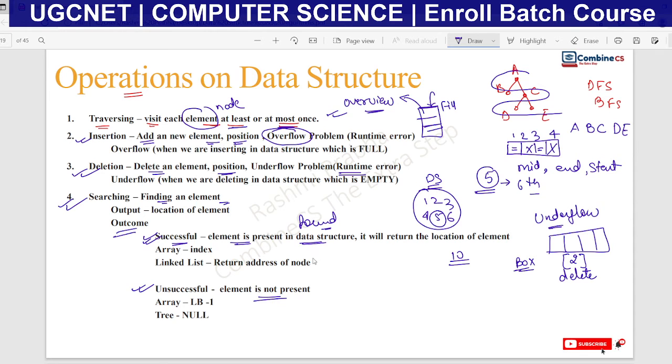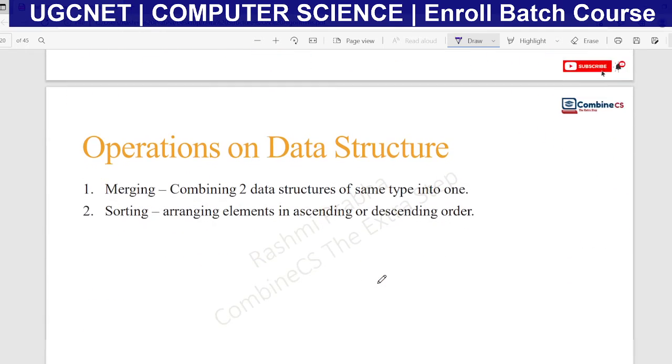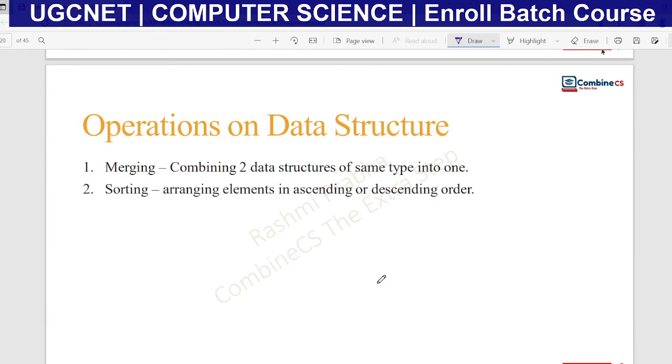We have many different types of representation like array, linked list, and tree. We will discuss this in the next videos one by one. The two next important operations are merging and sorting.